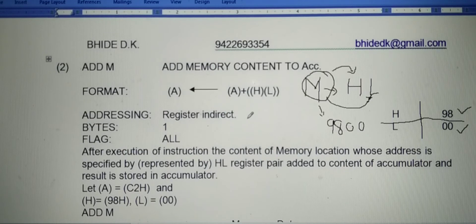Whenever any register pair represents the memory, the addressing mode is said to be register indirect. This is one byte instruction and flags affected equal to all.